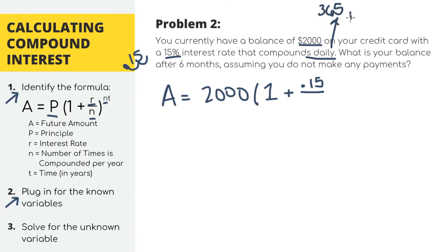So if it compounds daily, then it compounds 365 times per year. And T equals 0.5 years because six months is one half of a year. When we calculate it all together, we'll get that A equals $2,155.74.